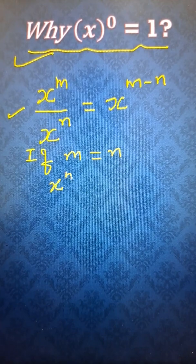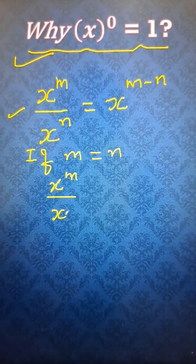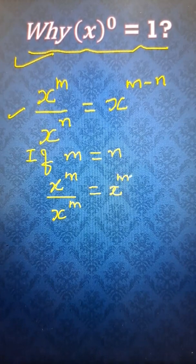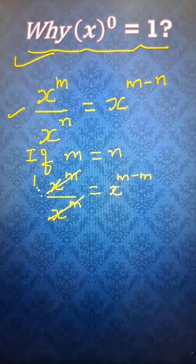In that case, x raised to power m upon x raised to power m. So I am putting n equal to m. x raised to power m minus m. So this cancels out and gives us 1.